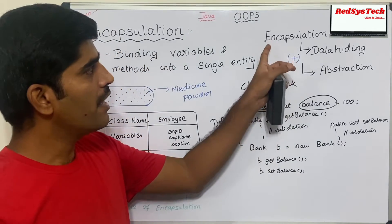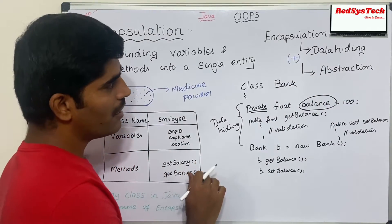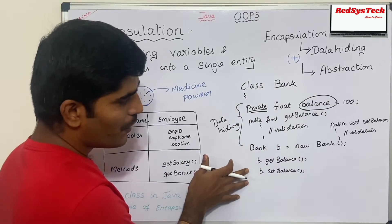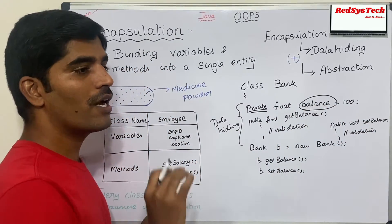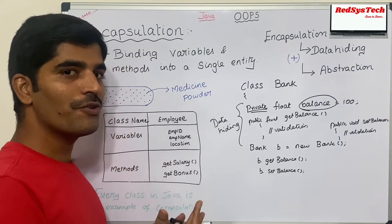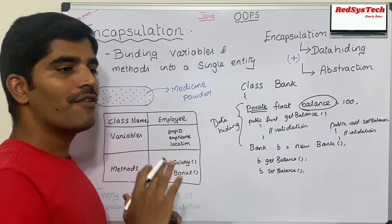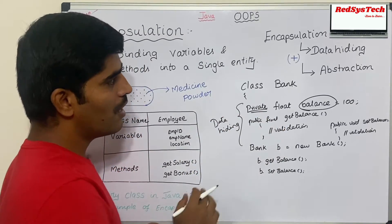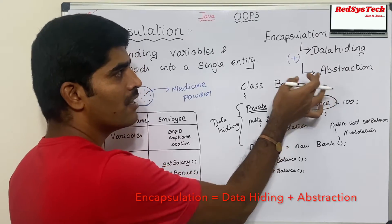Encapsulation is a combination of both data hiding and abstraction. Here we have achieved data hiding, but where is abstraction? Abstraction is achieved because the end user does not know how the method is implemented — the end user only knows how to access the method. Whatever validation, language, or technology is used internally, the end user does not know about it. You are giving only the external interface, not the actual implementation, to the end user. This is abstraction, and together with data hiding it forms encapsulation.